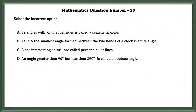Mathematics question number 30. Select the incorrect option. A triangle with all unequal sides is called a scalene triangle — yes, that is correct. At 1:15, the smallest angle formed between two hands of the clock is an acute angle — that is also correct.